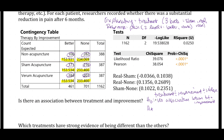The alternative hypothesis is the opposite: treatment and improvement are associated, which is the same thing as saying they are not independent. Notice there is no symbolic hypothesis, at least as far as this class is concerned, for the test of independence. We are not writing this out in terms of true proportions.